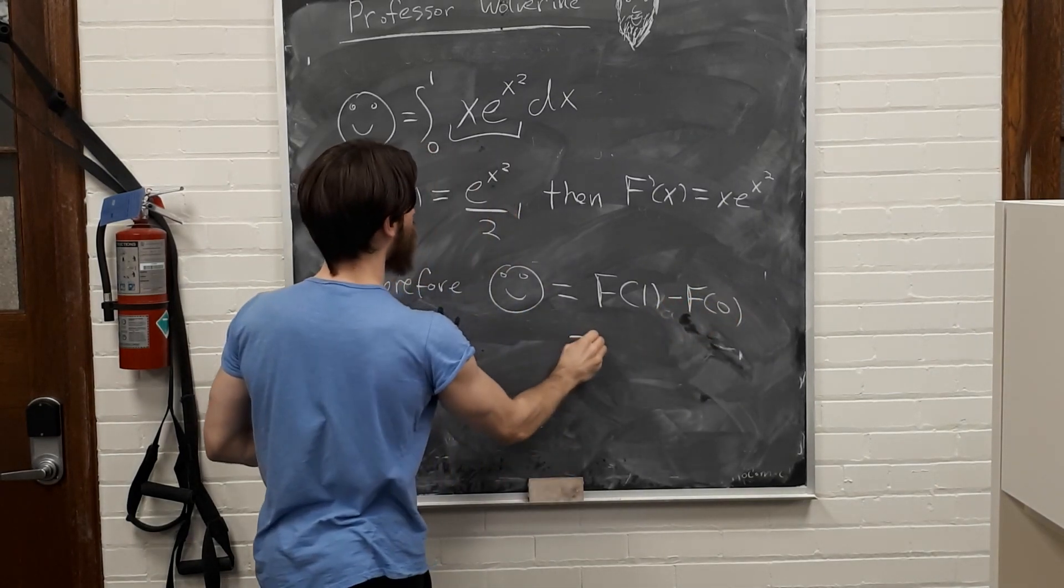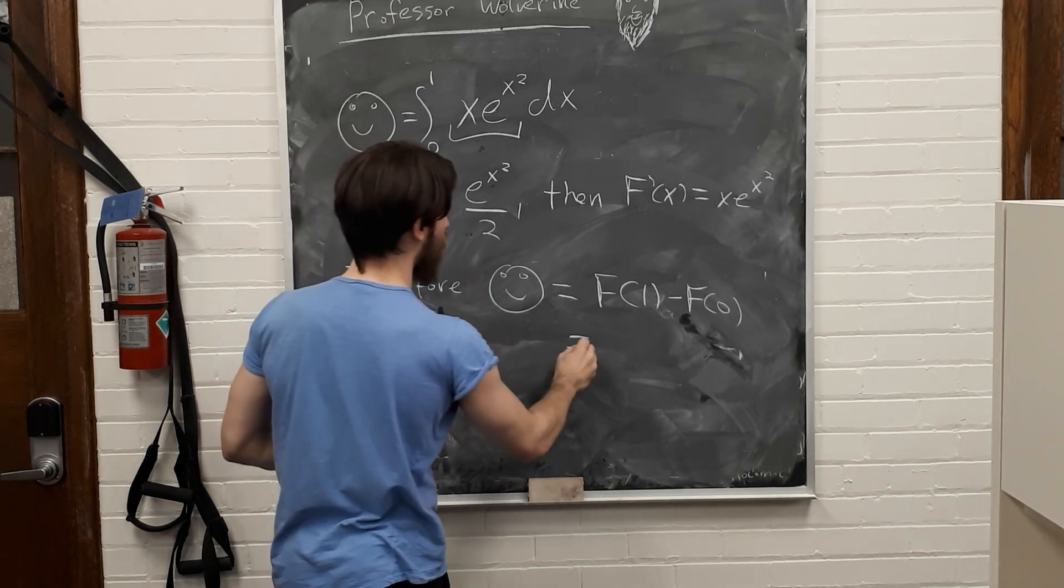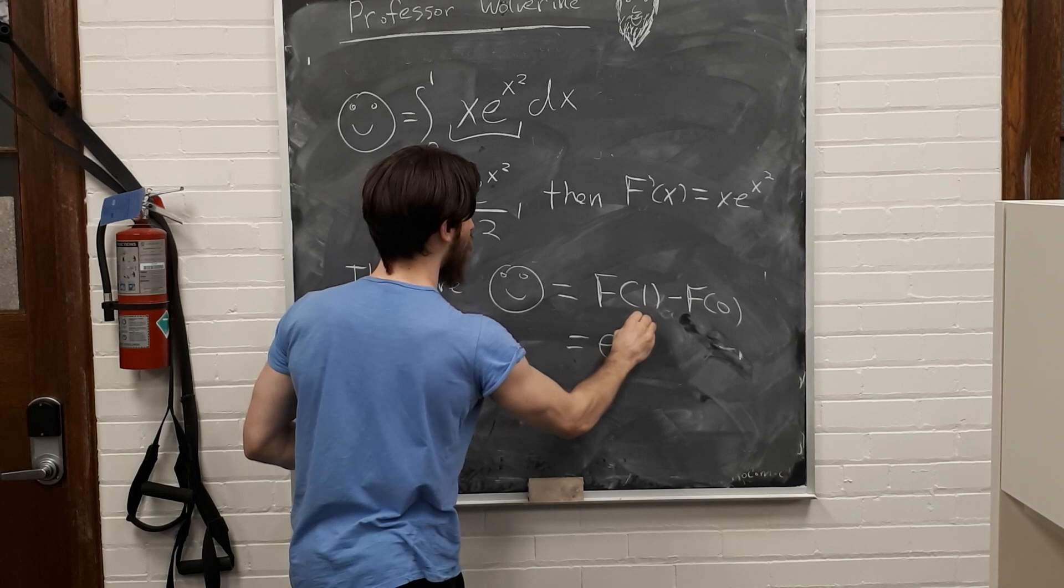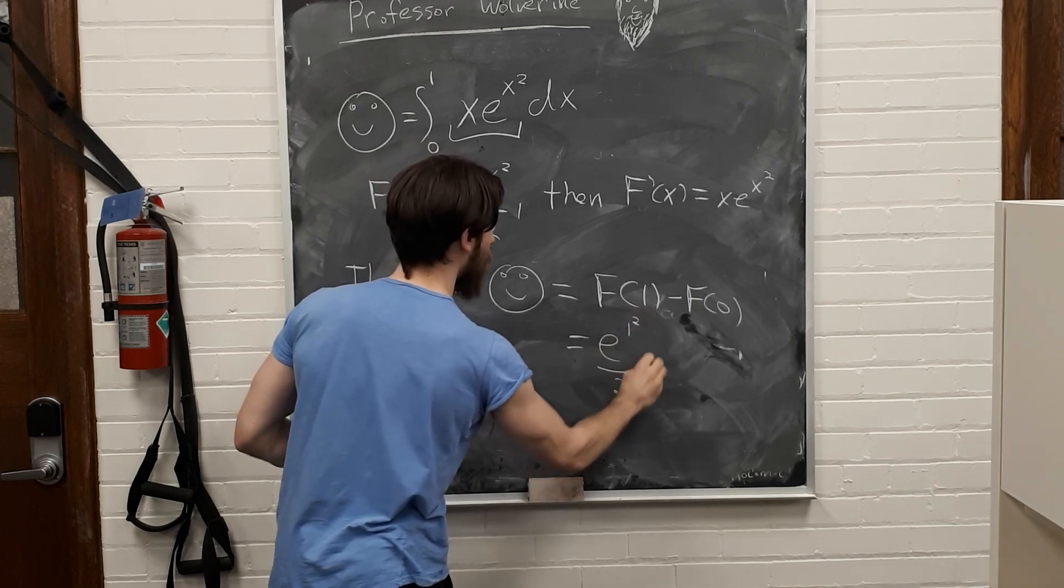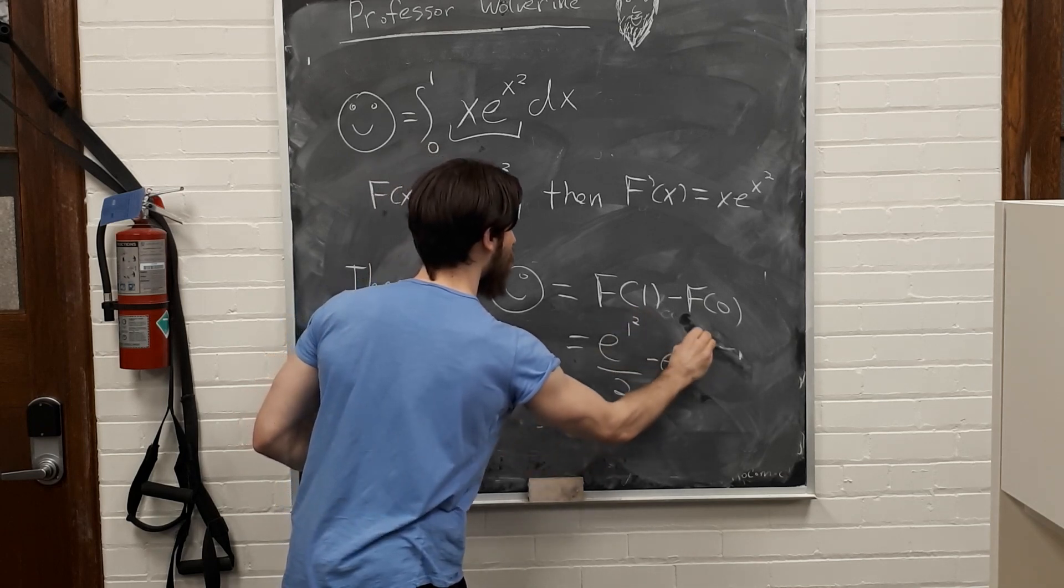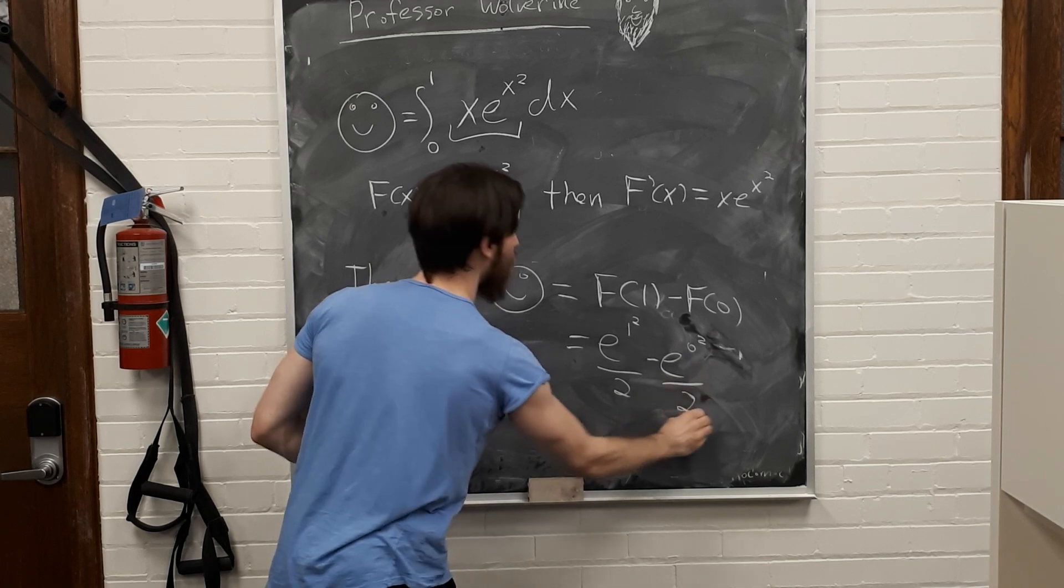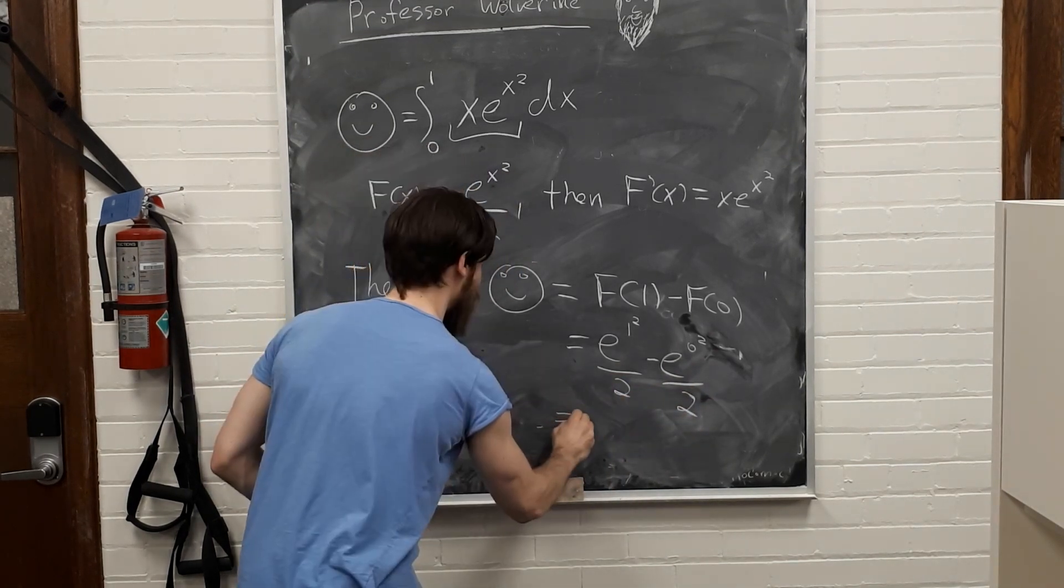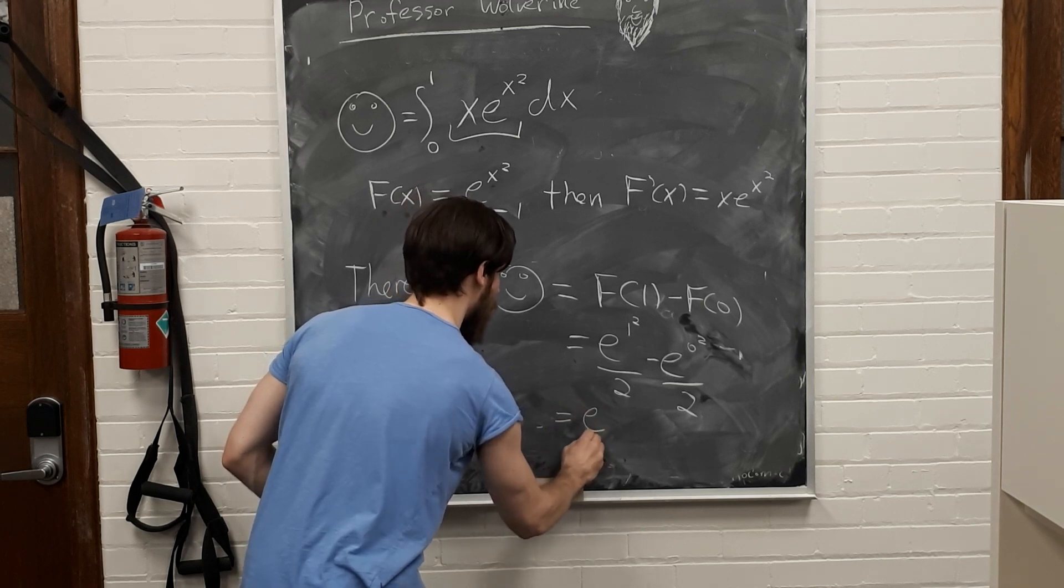Which is equal to, if we plug that into here, e to the 1 squared over 2, minus e to the 0 squared over 2. 1 squared is just 1, e to the 0 is just 1.